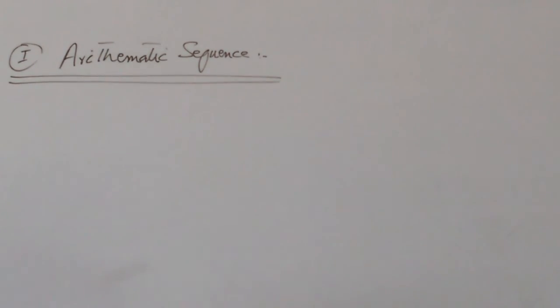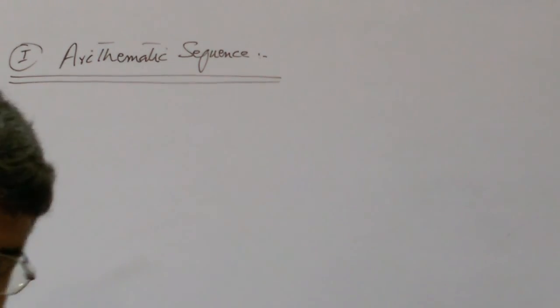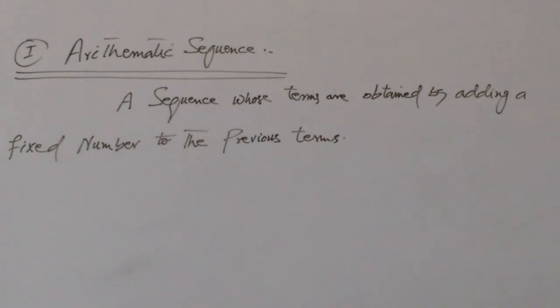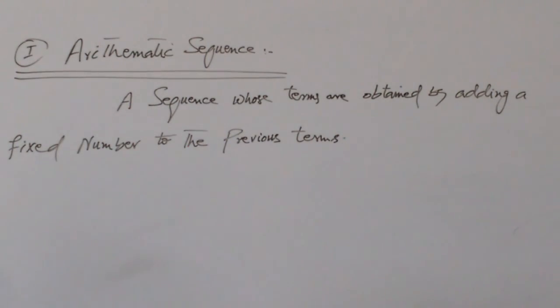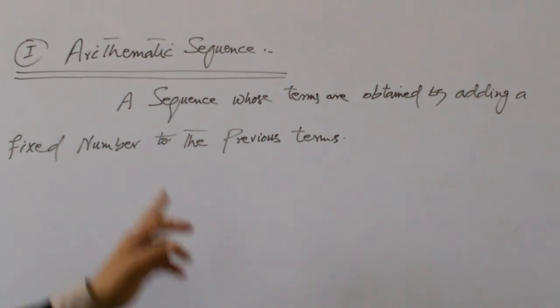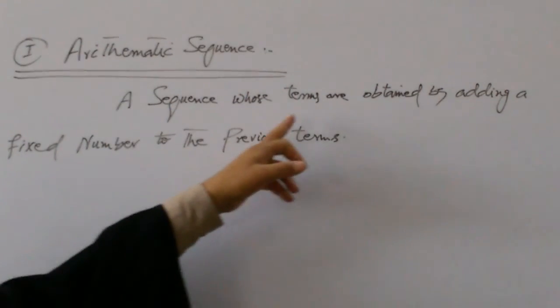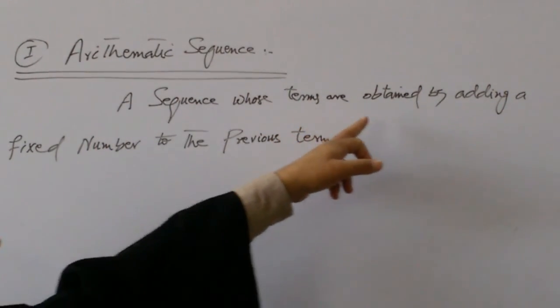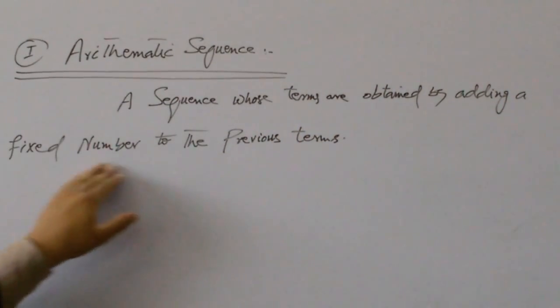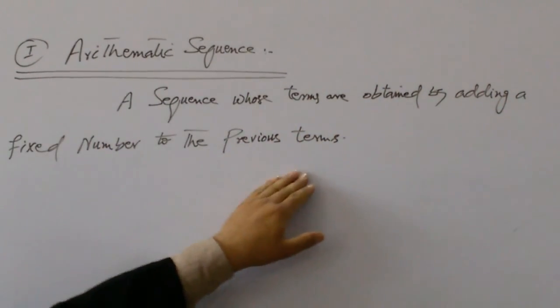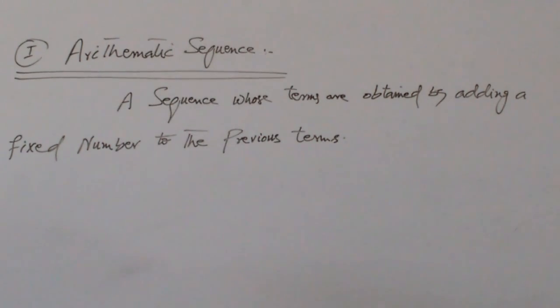Let us define the arithmetic sequence. A sequence which is formed by adding some fixed number to the previous term.